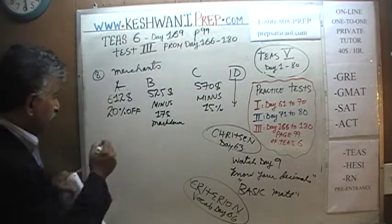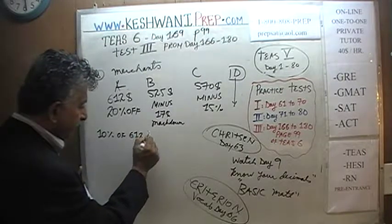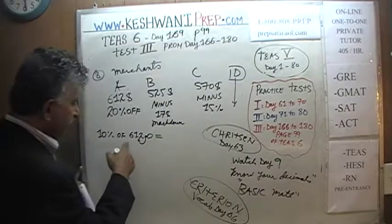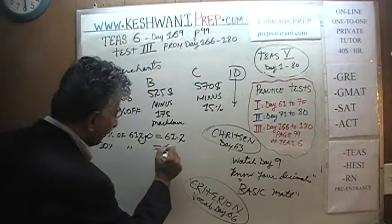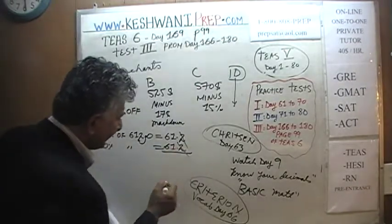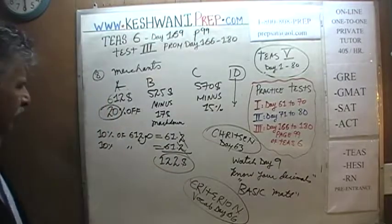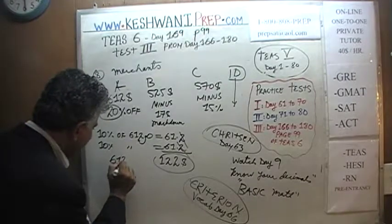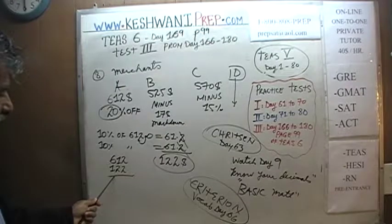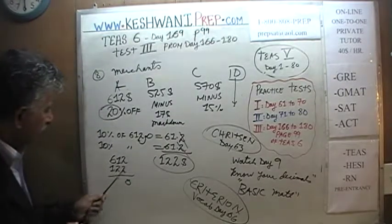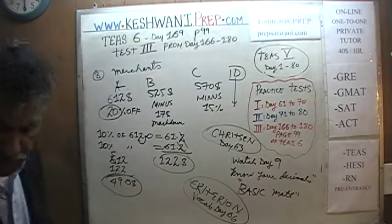We know 10% of 612 is just moving the decimal: 10% = $61.20. We need 20% off, so another 10% is another $61.20 — total discount is approximately $122. We can forget the 40 cents; it won't play a role. So 612 minus 122 = $490. Merchant A is willing to give it to us for $490.